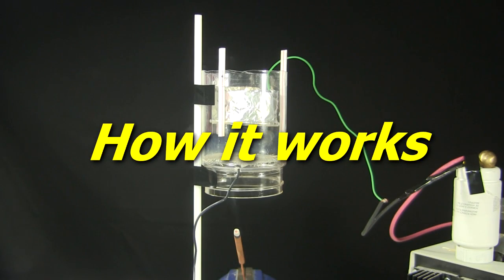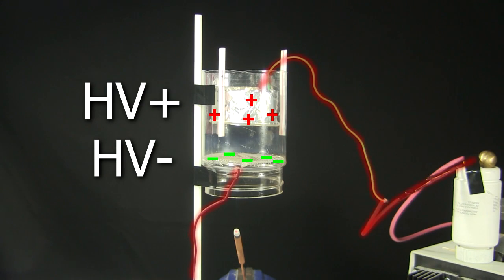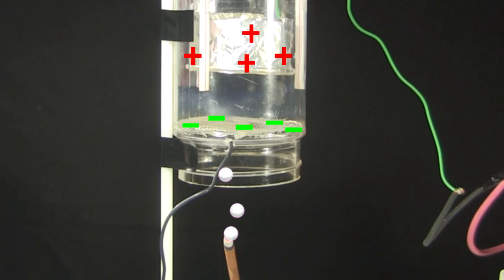First, how the smoke precipitator works. There's a metal mesh here that's charged with a high voltage negative charge, and there's an aluminum foil cylinder here that's charged to high voltage positive. As smoke passes through the mesh, smoke particles pick up a negative charge. The negatively charged particles are attracted to the positively charged cylinder and stay there. Whatever's left exits the top.